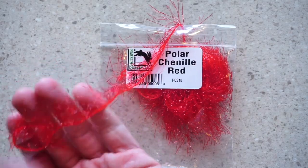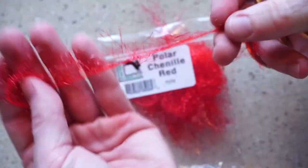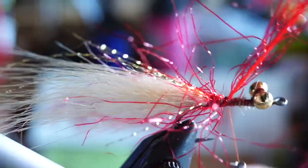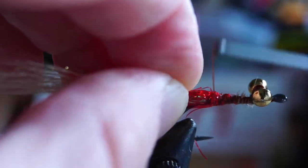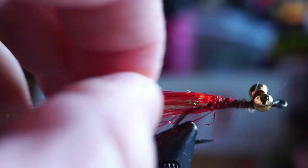Now this is normally not part of the fly, but I like adding a red polar chenille for some accent color. Tie this in and make about three to four touching wraps with it at the base of the tail. Then pull all the fibers rearward and tie them back up on top of them to keep them angling rearward.